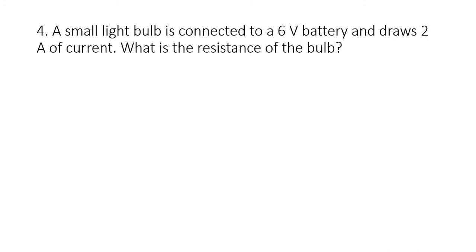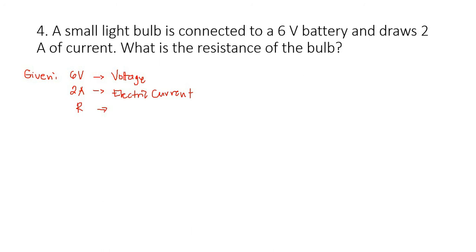Next problem: a small light bulb is connected to a 6 volt battery and draws 2 amperes of current. What is the resistance of the bulb? The given values are 6 volts — that is your voltage — and 2 amperes — that is your electric current. Resistance R is unknown, so R is equal to V over I. Substituting: R equals 6 volts over 2 amperes, which gives you 3 ohms.